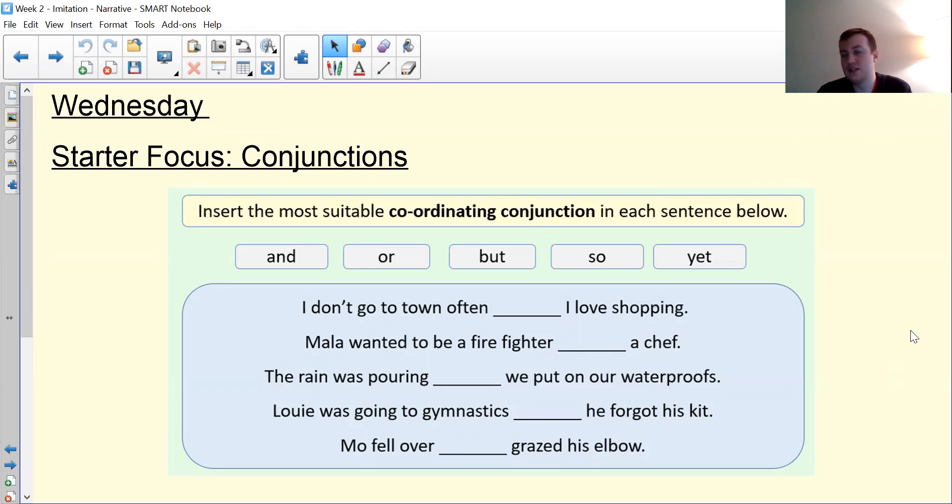So you've got and, or, but, so, and I've even put in yet. You've got five sentences underneath. Pause the video, have a go at putting in the right coordinating conjunction for the right sentence. Off you go.